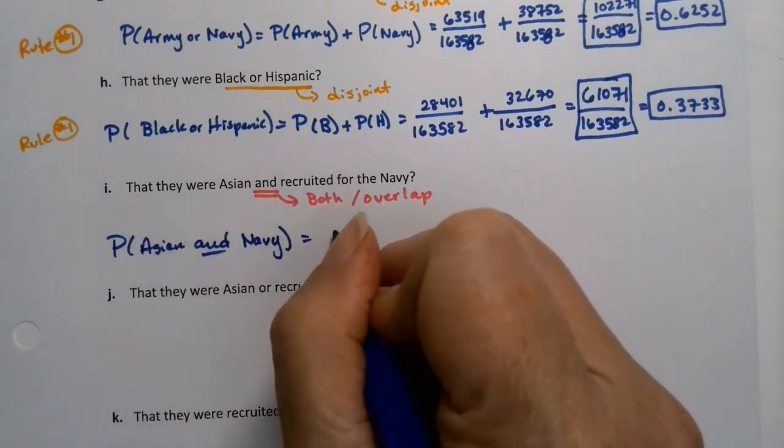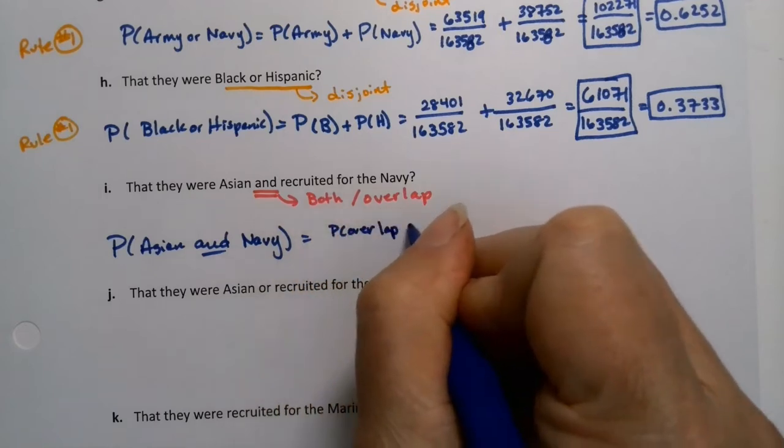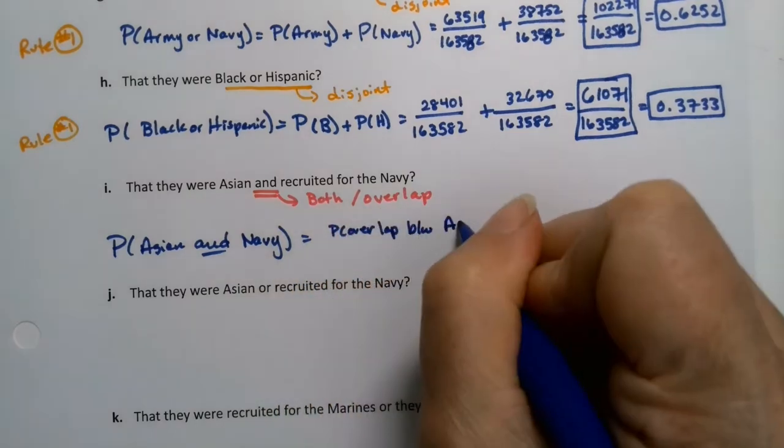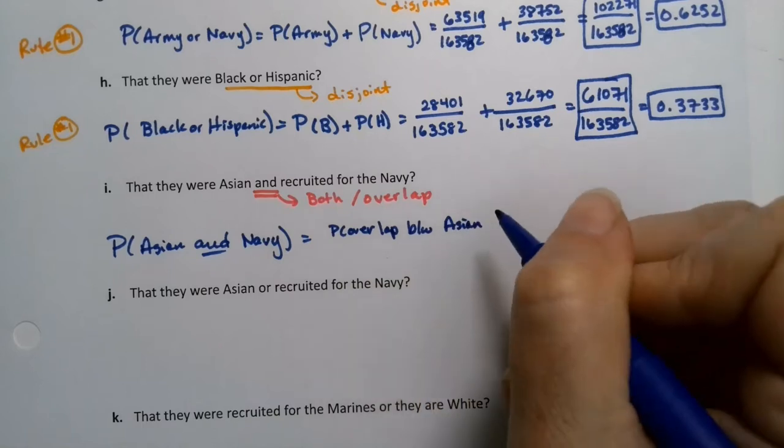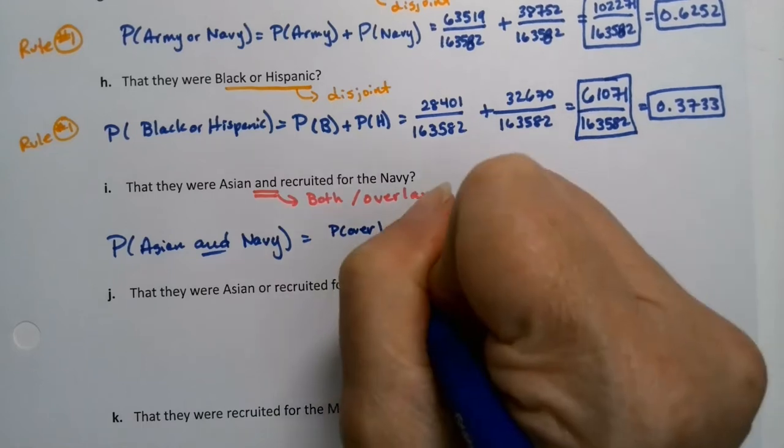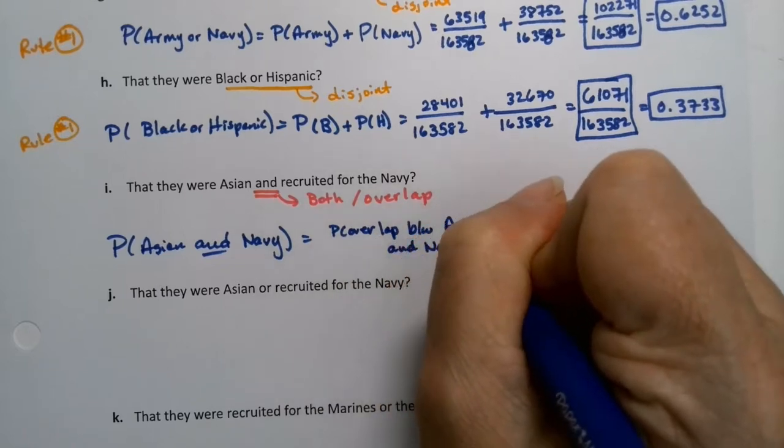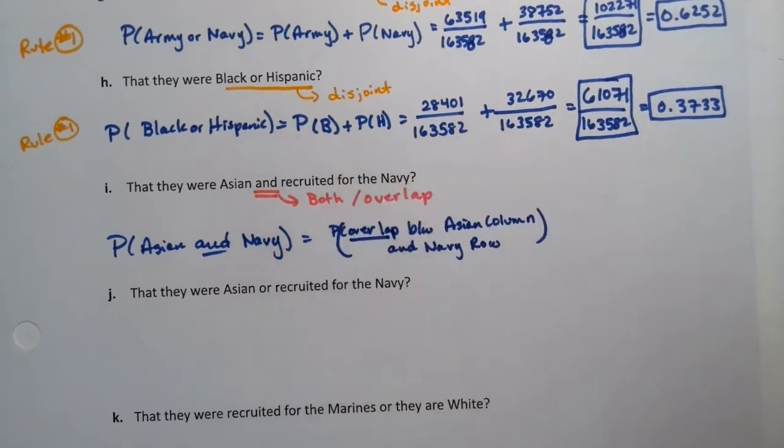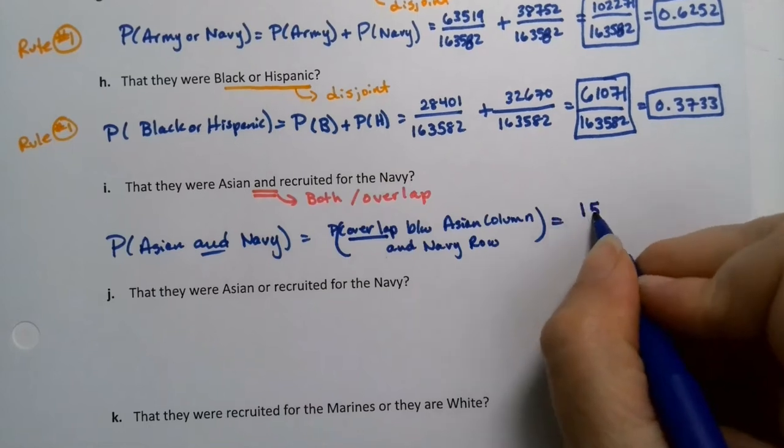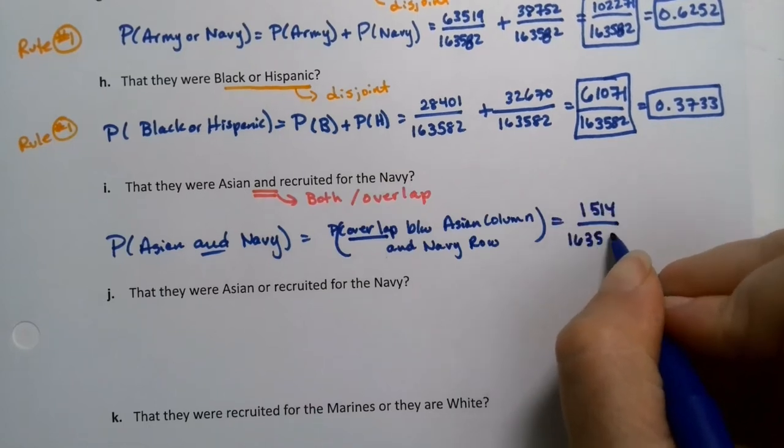It'd be the probability of the overlap between the Asian column and the Navy row. So you're looking for that overlap and that would be 1,514 over the grand total, 163,582.